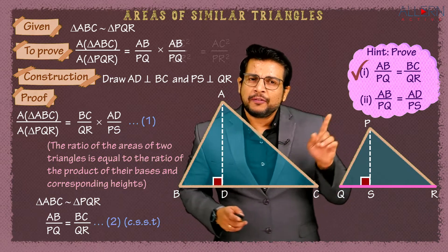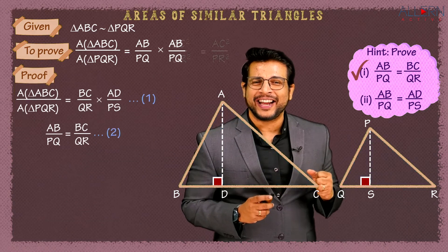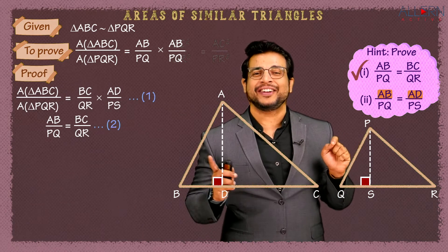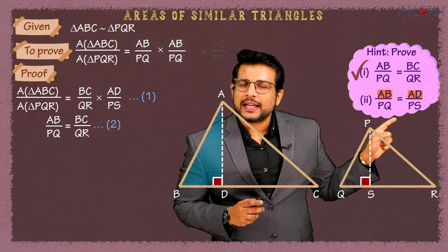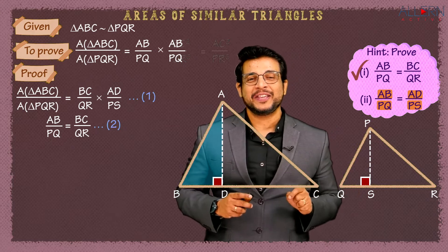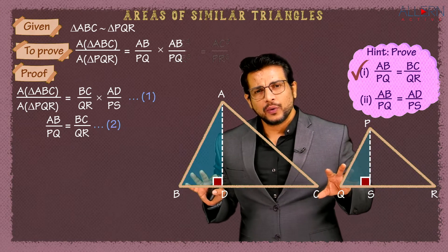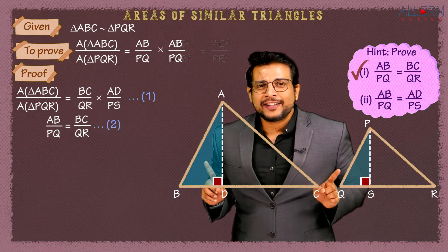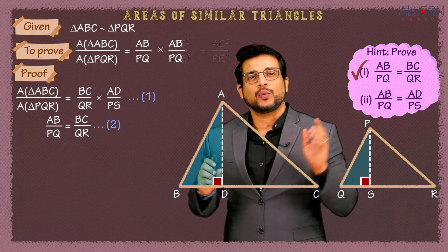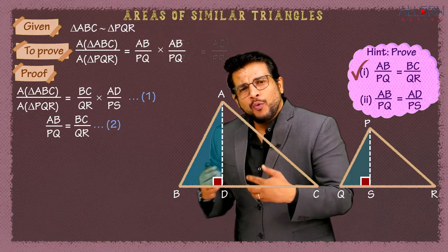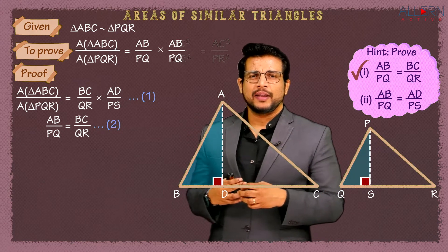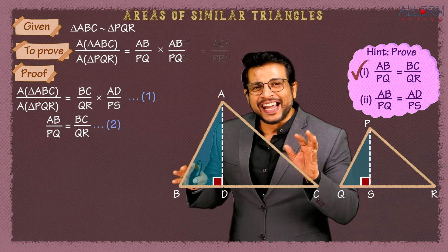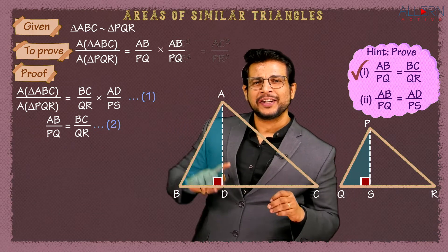We need one more pair of equal angles. Do we see angle B equal to angle Q? We don't see it directly, but here's the hint: look at the given — triangle ABC ~ triangle PQR. When two triangles are similar, their corresponding angles are equal. So angle B and angle Q are corresponding angles of similar triangles.